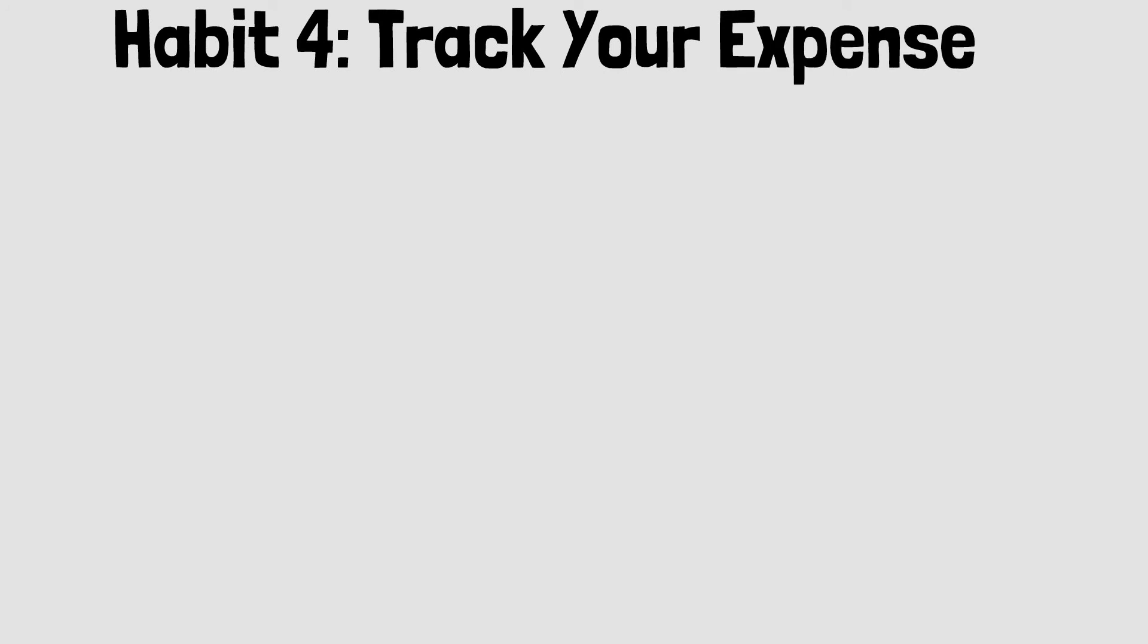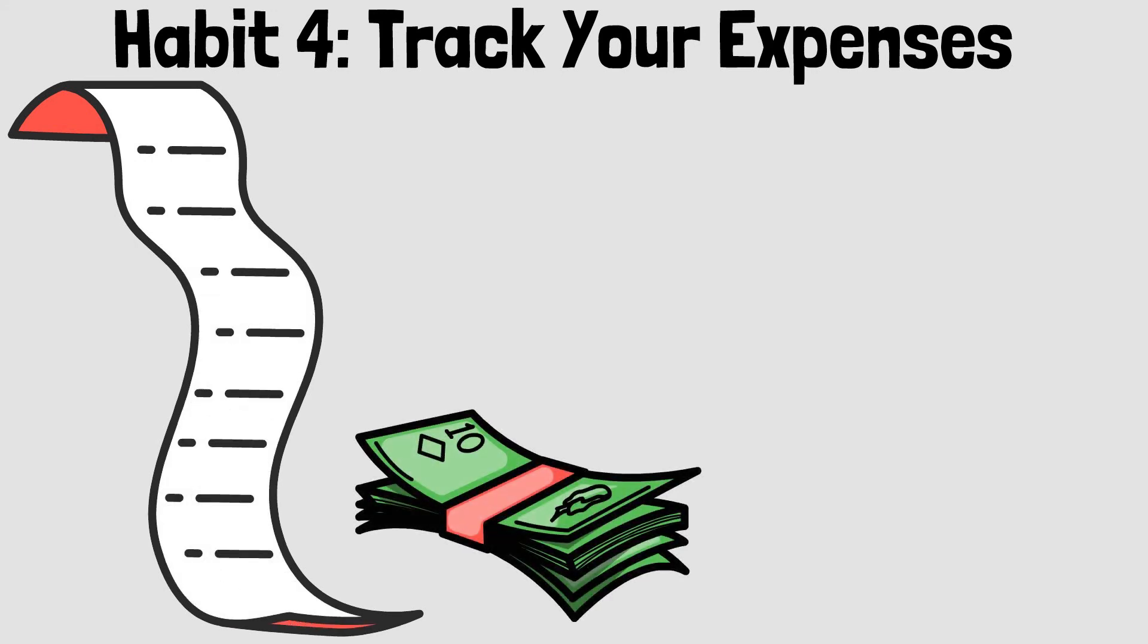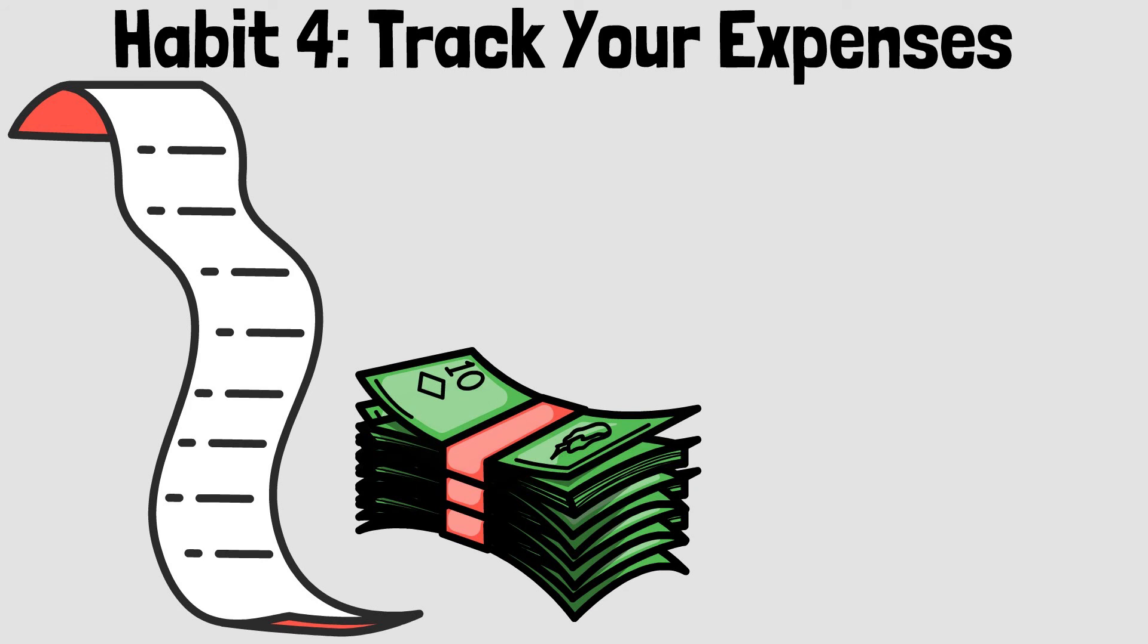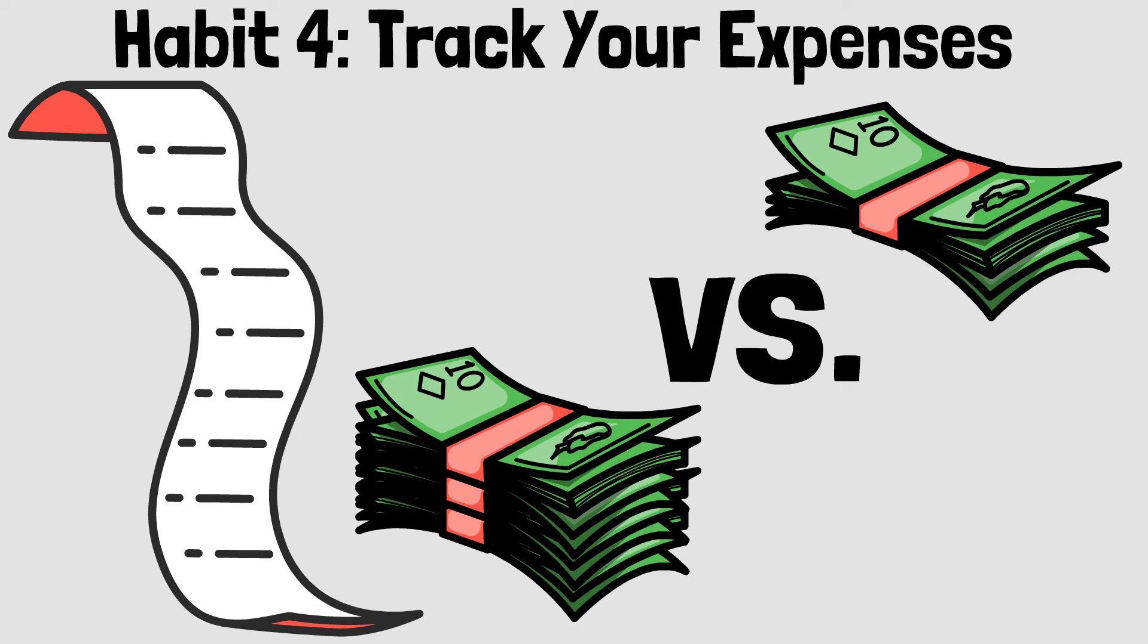Habit four: track your expenses. One of the most useful things you can do to improve your financial situation is to track all of your expenses for one month. It will show you how much money you are actually spending versus how much you think you are spending. Spoiler alert: the first time most people do this, myself included, they discover they are spending much more than they initially thought.